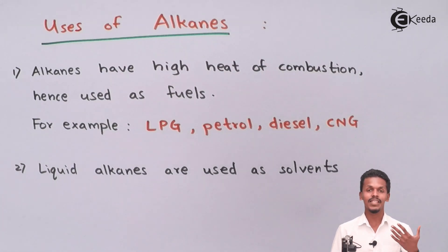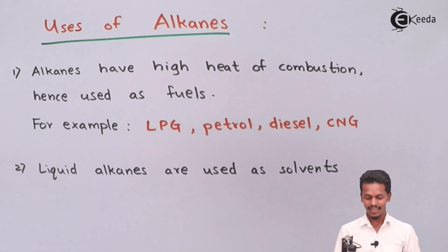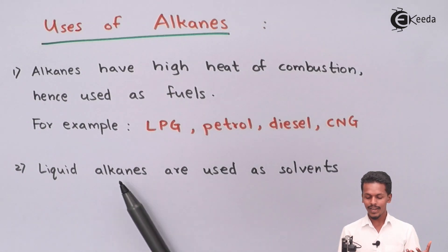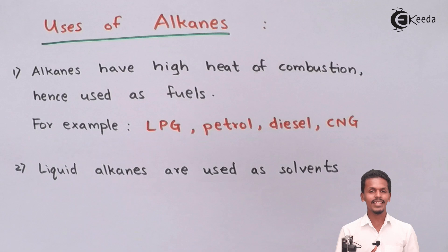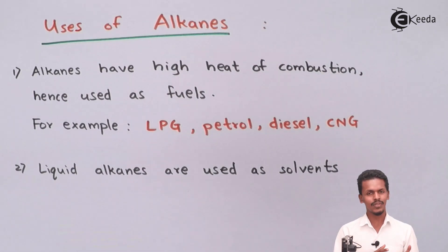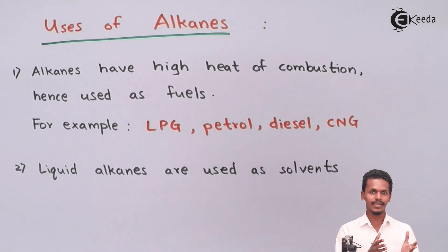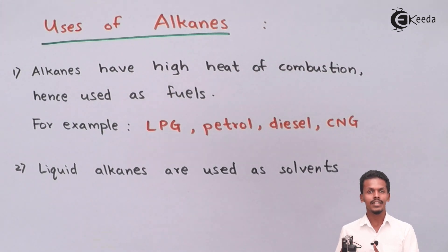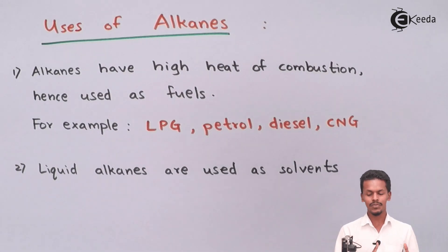So alkanes play a very important role as fuels because of their high heat of combustion. The next use is that liquid alkanes are used as solvents. Alkanes are non-polar molecules, and because of their non-polarity they are used as solvents to dissolve other non-polar molecules. Alkanes with carbon numbers C1 to C4 are gaseous, while those from C5 to C16 are present in liquid form and are used as solvents.